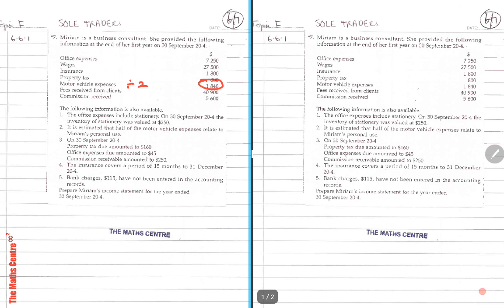On 30th September, property tax due amounted to $160, so you have to accrue $160. Office expenses due amounted to $45, so from the office expenses, while you less out the stationery, you have to accrue another $45. Commission receivable amounted to $250, so you need to accrue commission received of $250. Insurance covers a period of 15 months to 31st December. Your year end is 30th September, so October, November, December - you have three months out of 15 months times the insurance which is $1,800.